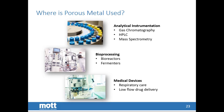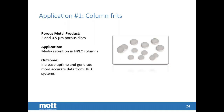Where is porous metal used? For analytical instrumentation: gas chromatography, high-pressure liquid chromatography, and mass spectrometry are some of the applications. Bioprocessing sees a lot of either venting or sparging for bioreactors and fermenters. And medical devices run the gambit of applications from respiratory care to low-flow drug delivery that is implanted in the body. In the HPLC application, the porous metal is used for essentially retainers on the top and bottom of the columns. The column manufacturers will put their media in the column and the intention of the porous is just to keep that media in the column while letting the liquid pass through. This increases uptime and generates more accurate data.